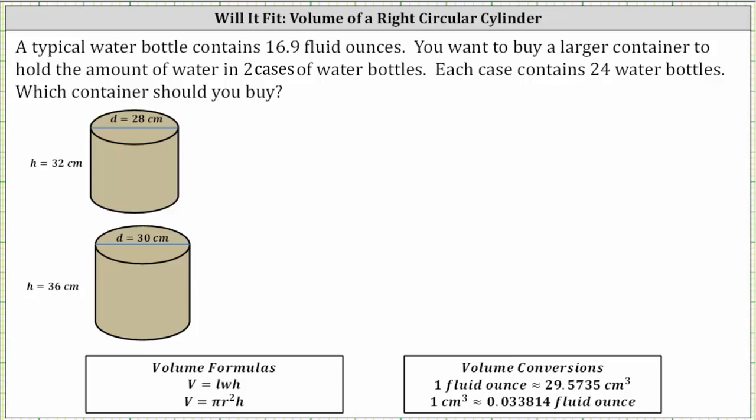A typical water bottle contains 16.9 fluid ounces. You'll want to buy a larger container to hold the amount of water in two cases of water bottles. Each case contains 24 water bottles. Which container should you buy?